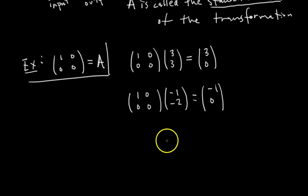Interesting. Maybe you're starting to see a pattern. Let's do a third one for good measure. What if we input negative 2, 2? Well, the transformation entails multiplying by A. And so then our output vector, if our input is negative 2, 2, our output would be negative 2, 0.